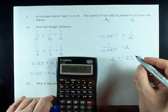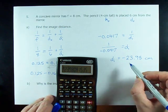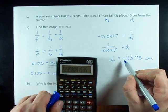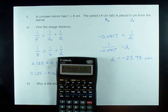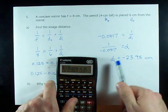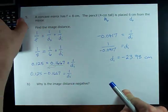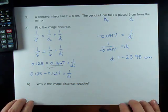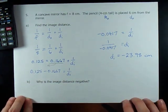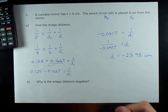So, what this means is that the image is going to be about 24 centimeters behind the mirror. The negative D means it's behind the mirror. In fact, that's what I've made a follow-up question here for you.